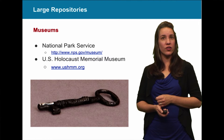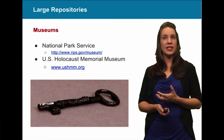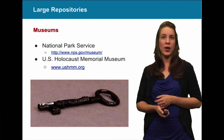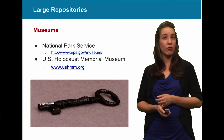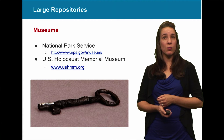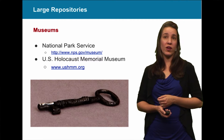The National Park Service is a great place many people don't think about for objects — they have museums and collections as well. The skeleton key featured here was used at Abraham Lincoln's Springfield home and is in the National Park Service collections. The U.S. Holocaust Memorial Museum is another great resource for artifacts donated by Holocaust survivors or the families of victims.